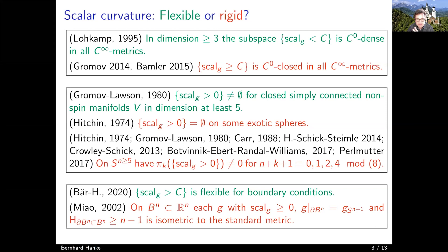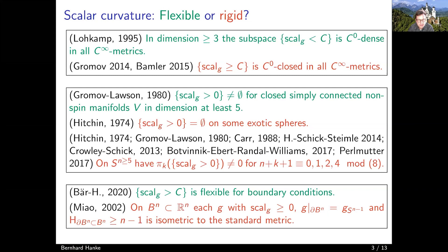There are also existence and non-existence results. We have a very general existence result of Gromov and Lawson for non-spin simply connected manifolds of dimension at least five: we have the existence of positive scalar curvature metrics in dimension at least five. On the contrary there are interesting obstructions to positive scalar curvature metrics — for example on exotic spheres — a very interesting phenomenon investigated by Nigel Hitchin in 1974 in his famous paper about harmonic spinors.